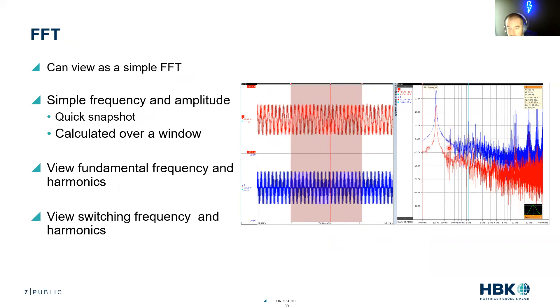That's the fifth harmonic, seventh - you can see all those harmonics. You can see our switching frequency. And it's just calculated over this window. This is the quick and dirty what's happening. You can view this fundamental frequency in the harmonics, you can view the switching frequency in harmonics. So we have an FFT that's just a quick window.